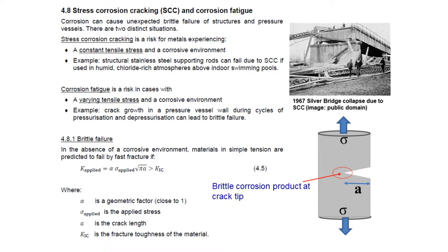The second case is corrosion fatigue, which is relevant where there is a varying, cyclic tensile stress affecting a structural metal element in a corrosive environment. This might happen with a pressure vessel that is frequently filled and emptied. In that case, we can have additional mechanisms beyond those in the constant tensile stress case, which might lead to brittle failure.